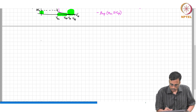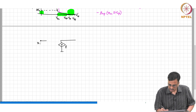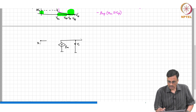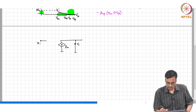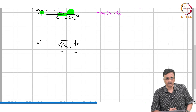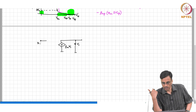Let us assume the common source amplifier has an incremental equivalent with some GM. To get a lot of gain, as we have seen with the active load, this is GM times VI, and it effectively goes into some output resistance, which in the circuit we've seen is the parallel combination of the PMOS and the NMOS output resistances.